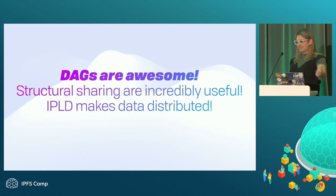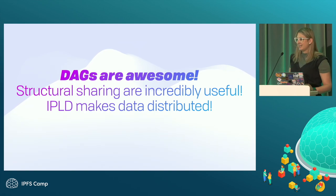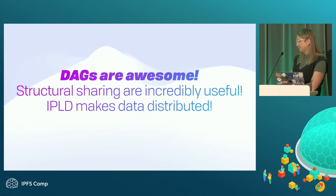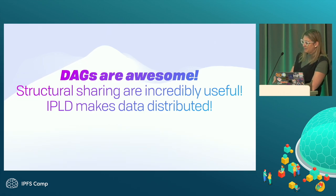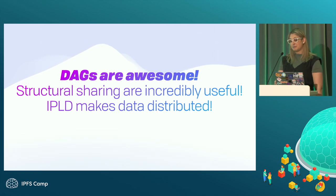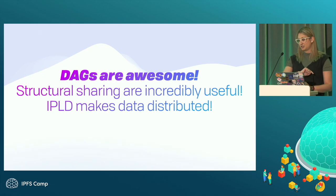DAGs — directed acyclic graphs — are awesome. They give us a lot of superpowers. Almost all data structures can be expressed as them, obviously nothing with cycles, but that gives us a lot of benefits for things like structural sharing and deduplicating data. And on top of that, IPLD makes that data distributed, which is awesome.